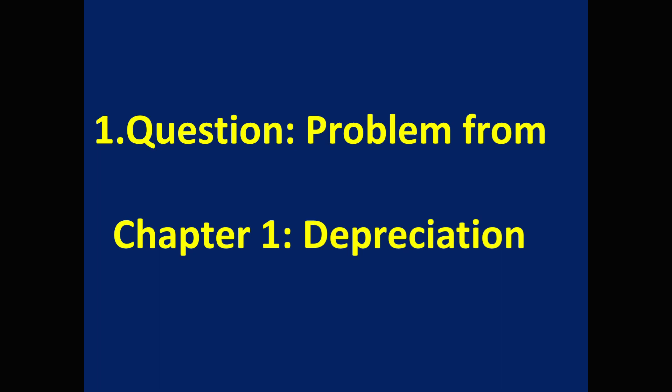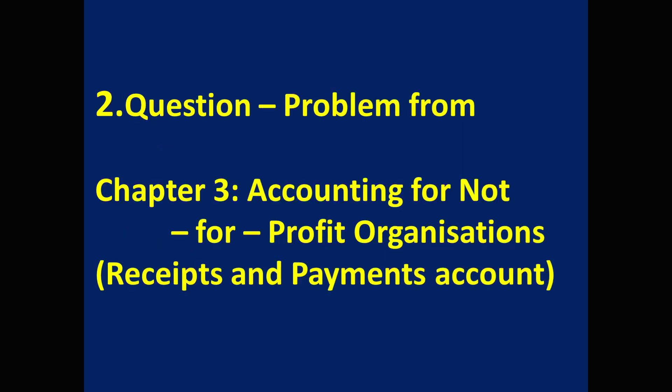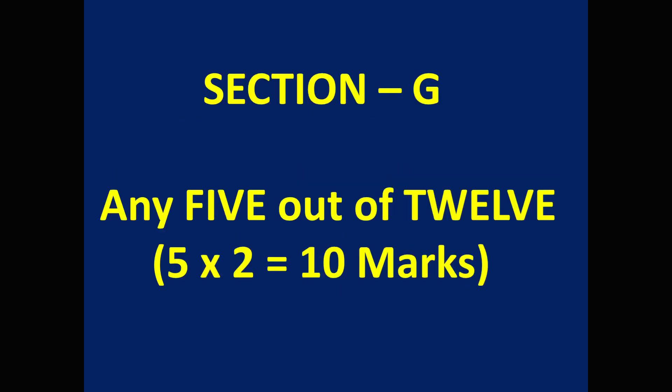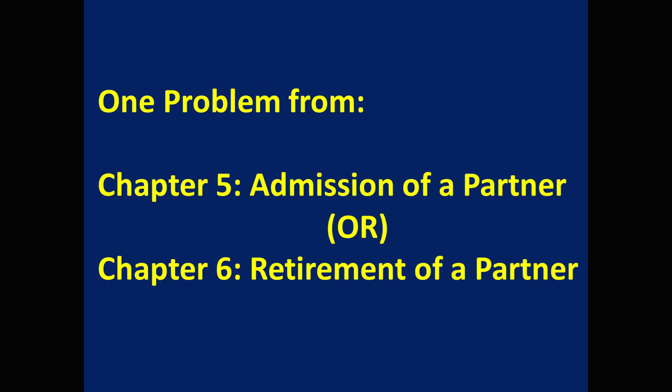In Section F, one question will be a problem from Chapter 1 depreciation, and a second problem from Chapter 3 accounting for not-for-profit organizations — for five marks, expect a problem on receipts and payments account; remaining are theory questions. Section G contains 12 questions; attempt any five, each carries two marks: 5×2 = 10 marks. Expect a two-marks problem on calculation of new profit and loss ratio or sacrificing ratio from Chapter 5 admission of a partner, and a problem on calculation of gaining ratio from Chapter 6 retirement of a partner. Remaining are theory questions.